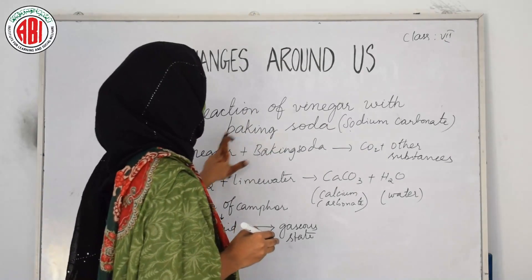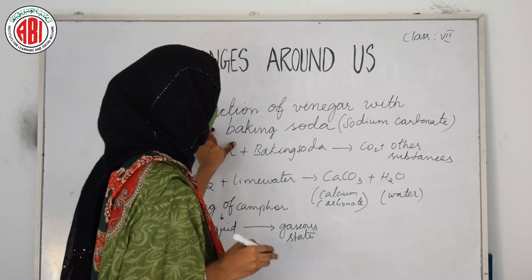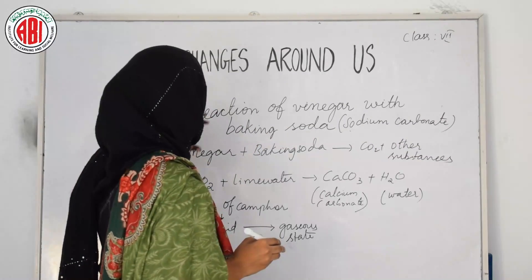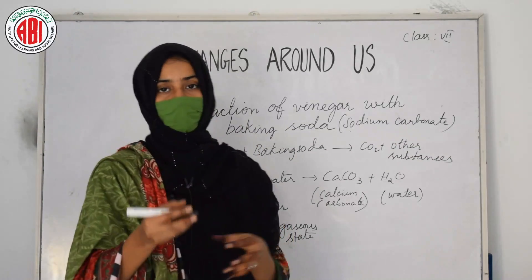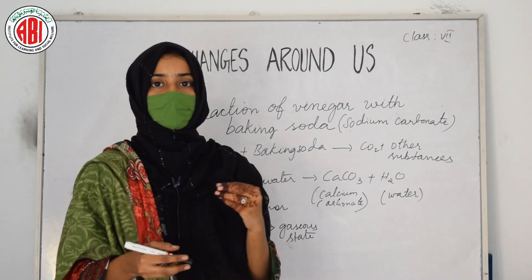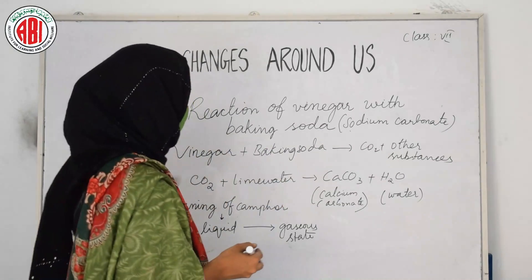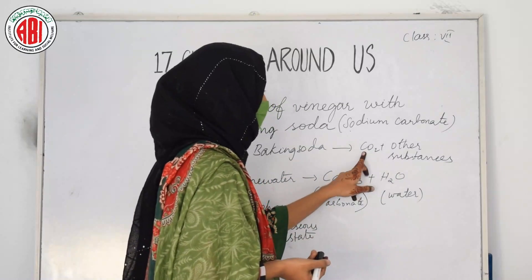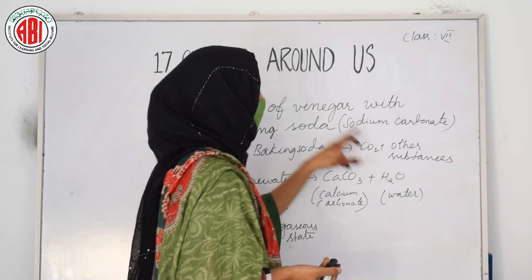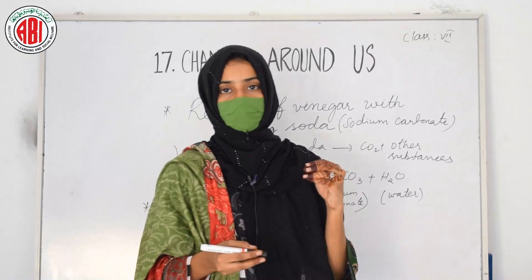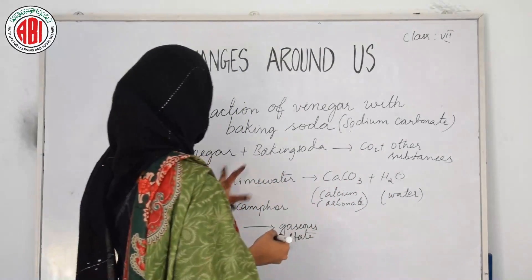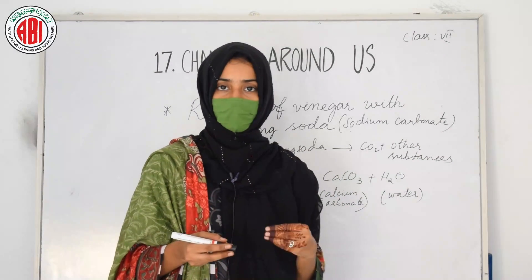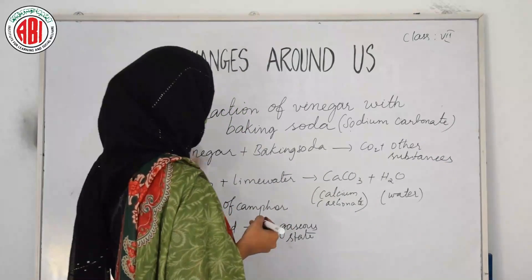Now we are going to see the reaction of vinegar with baking soda. Baking soda is sodium carbonate. When we take vinegar and add a spoon of baking soda into it, some bubbles come out with a hissing sound. Those bubbles contain carbon dioxide along with other substances. To confirm that the bubbles released are carbon dioxide, we are going to do one more test.